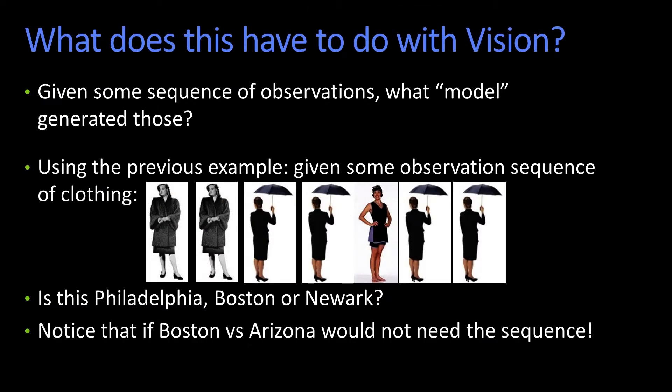Notice that if we were checking Boston versus Arizona, you basically wouldn't need the sequence. It doesn't rain in Arizona for the most part, so you can say: do I see umbrellas? And since it's always lousy weather in Boston — I live there — if you see bathing suits, you know it's actually Cape Cod. Just from the individual elements themselves, you could determine whether it was Boston or Arizona. The whole idea of representing the time series is that there's something about the sequentiality that matters — the statistics of one thing following another that is indicative of the actual class. You're building models of those time series so that, given some observation sequence, you can say which one's most likely.